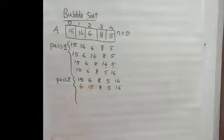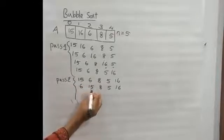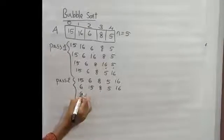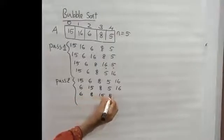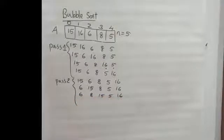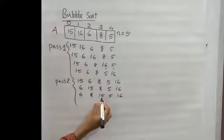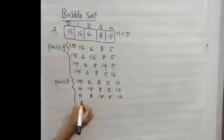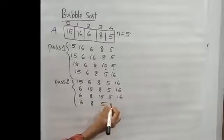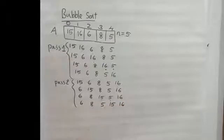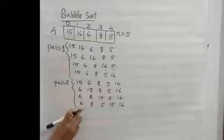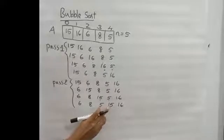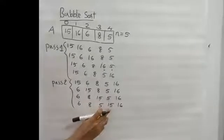15 is greater than 8, so interchange. Then 15 is greater than 5, so interchange. Array becomes 6, 8, 5, 15, 16. The second largest element is now in the second-last position. The array continues to be sorted pass by pass.